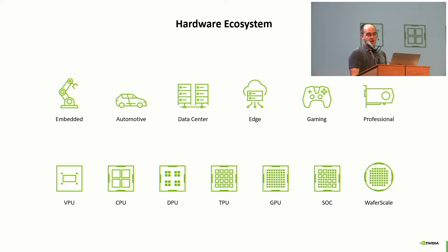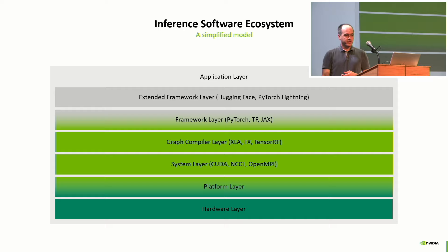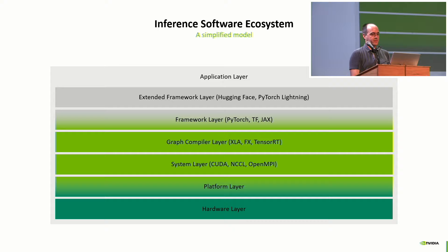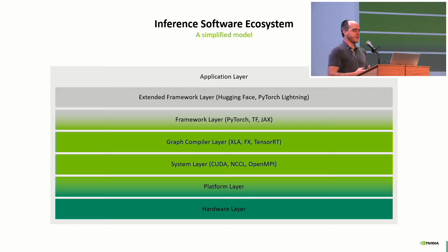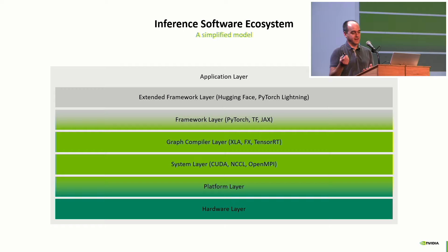What makes AI inference special is the software. The software ecosystem — this is a simplified model — starts with the hardware layer, built by a hardware company. On top of that, you build your platform, then the system layer. For NVIDIA, this is where you have CUDA and NCCL, or OpenMPI for cross-node communication. On top of that, for neural networks, you build the graph compiler layer — such as XLA, FX, or in my case, TensorRT — which optimizes the neural network down to the system layer.